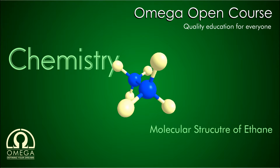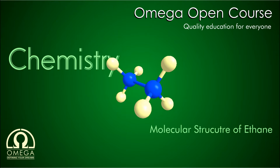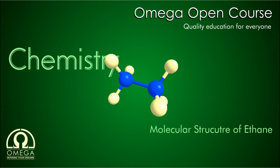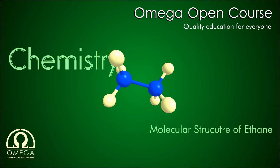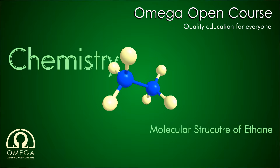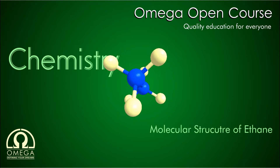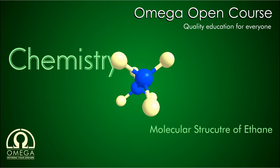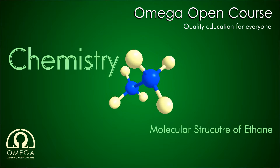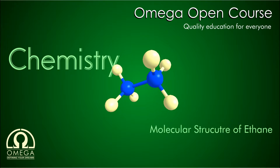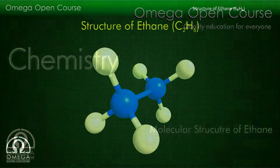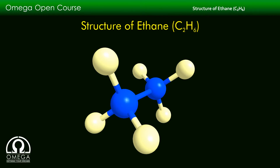Welcome to Omega Open Course. In this video we are going to learn about the molecular structure of ethane. Its molecular formula is C2H6. Let us look at its stick and ball model.